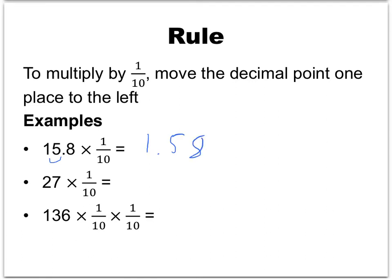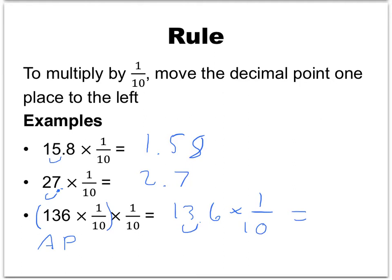In this next example, we multiply by 1 tenth twice. We can group the first two numbers together by the associative property of multiplication, which says that when multiplying more than two numbers, we can group them however we want and get the same answer. So we have 136 times 1 tenth, which is 13.6, and then multiply that by 1 tenth to get 1.36.